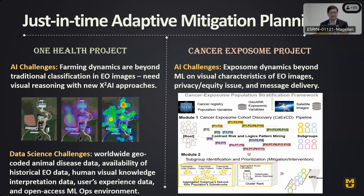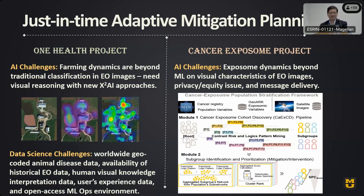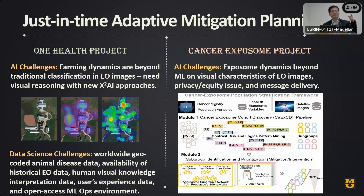On the data science challenges: finding high-quality geocoded information worldwide — from GIS, EO, healthcare, public domain pollutants, and socioeconomic data — is difficult. For AI challenges, looking at farming activities is not just simple classification. You have to incorporate reasoning. Domain experts say an area is high risk because it's been abandoned and shows no recent activity, so we need to capture that human reasoning.